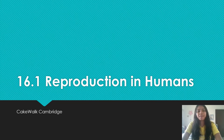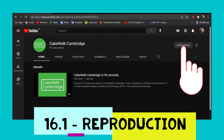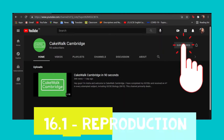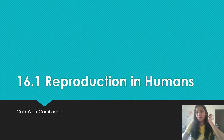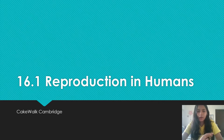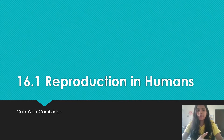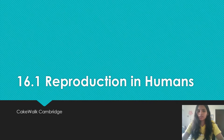Hey guys, welcome to KCOR Cambridge. I'm Ayesha and today we're going to start with chapter 16, Reproduction. This is a chapter that a lot of you guys have asked for repeatedly, so I hope this helps you. I'm going to be breaking this chapter down into two separate parts. This segment is primarily going to deal with asexual reproduction, which is the first part of your textbook. Let's get started.